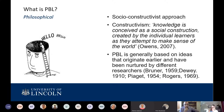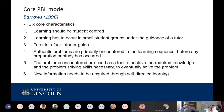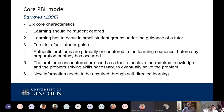Barrows's model, from one of the originators in Canada, considered four core characteristics of PBL. Learning should always be student-centered. It has to occur in small student groups — when group size exceeds nine it becomes unwieldy, with everyone fighting for time to feed back. Going under five also becomes challenging for its own reasons. The tutor acts as a facilitator or guide, and this is the aspect that teachers who have been teaching for some time may struggle with.